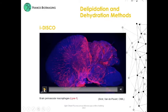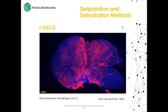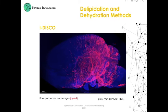Here is a video of a half-brain stained with the iDISCO protocol. You can observe in this video a red marker — a marker of perivascular macrophages.